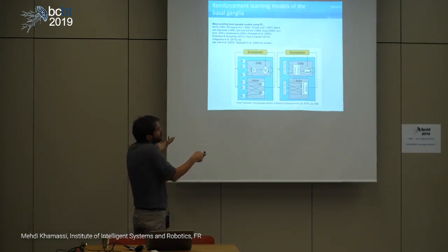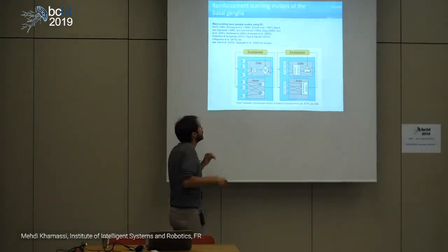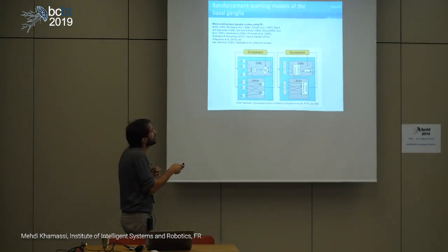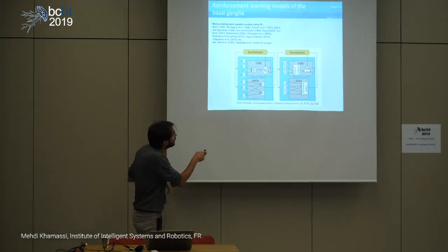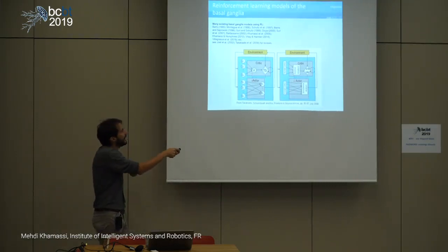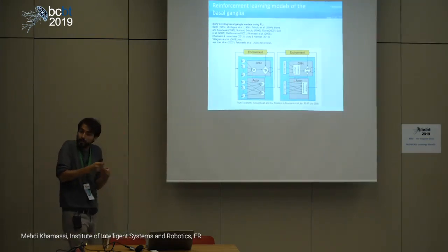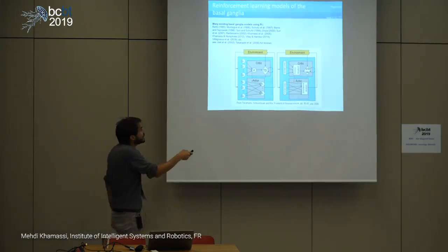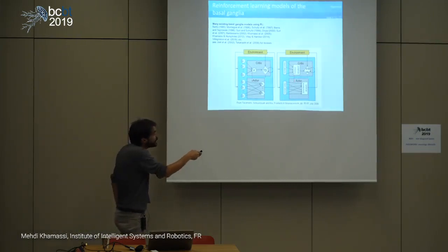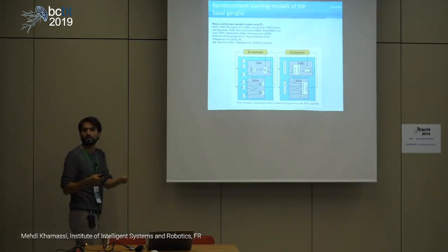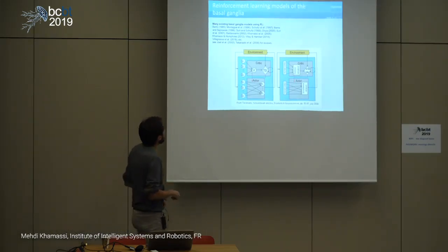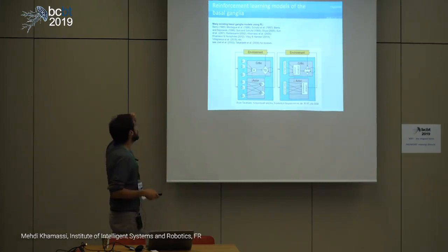These reward prediction errors would come back to modulate plasticity so the system learns to predict better and better. The same signals could be sent to an actor — for example in dorsolateral striatum — which would learn to select the right actions. Many of these models exist, and if you go into more detailed implementation of what's within the basal ganglia and how nuclei interact, you can generate novel predictions.